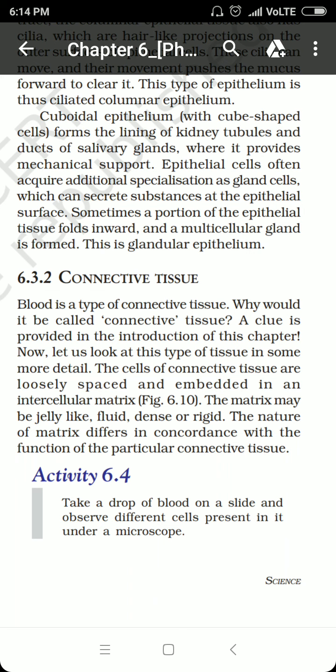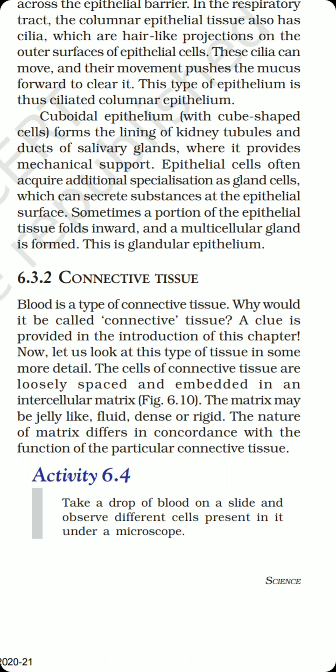For example, RBCs are concerned with the transport of oxygen and carbon dioxide from one part to another. When we talk about WBCs, they are the immunity-providing system of our body — they protect us against various infections and diseases. Platelets, on the other hand, are meant for coagulation or clotting of blood.